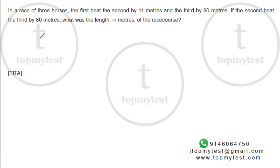This is a question which came up in CAT 2019 slot one, it's on races. In a race of three horses, the first beat the second by 11 meters and the third by 90 meters. The second beat the third by 80 meters. What is the length, in meters, of the racecourse?